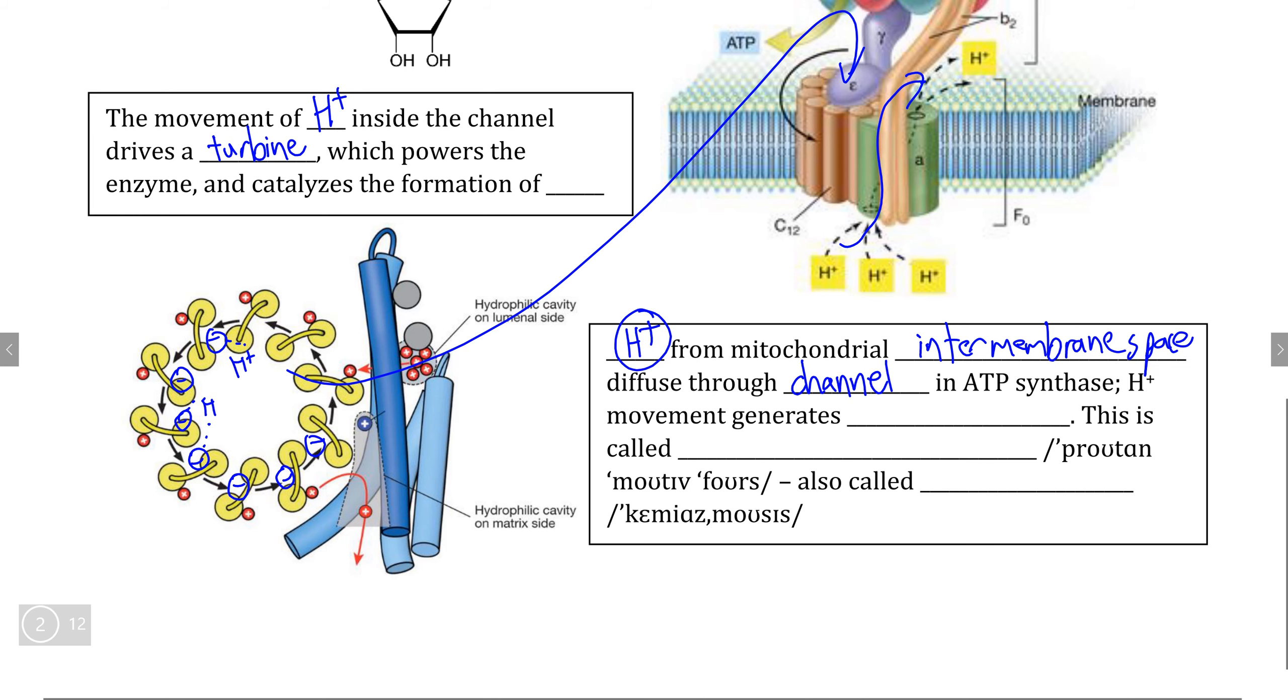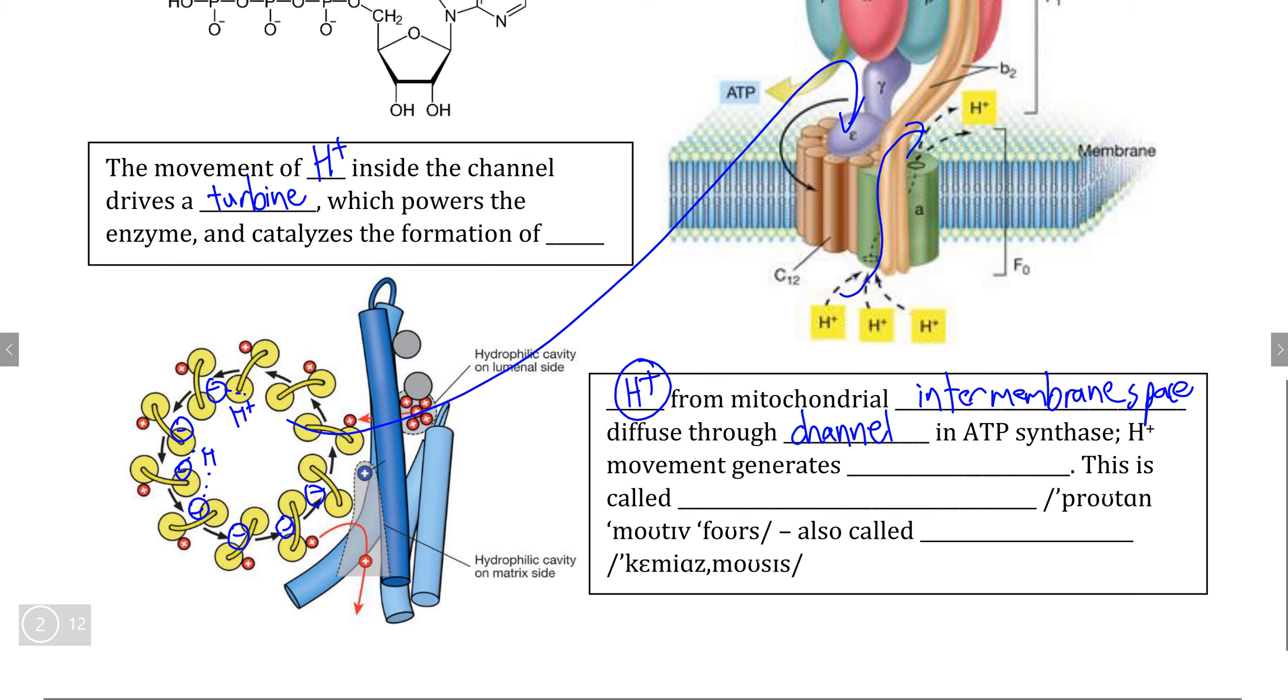So as the H plus moves through this channel protein here, it attracts to the negative charges on the inside of this protein turbine and actually causes this turbine to spin. And this is what drives the catalyzation of the formation of ATP.